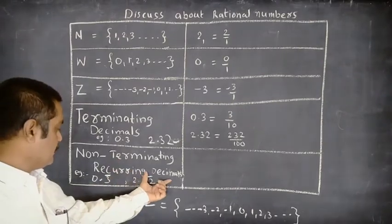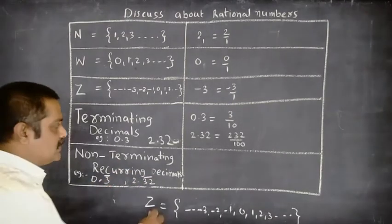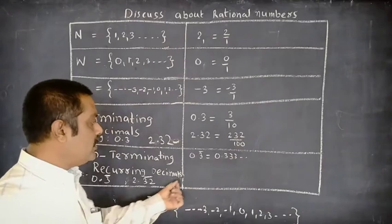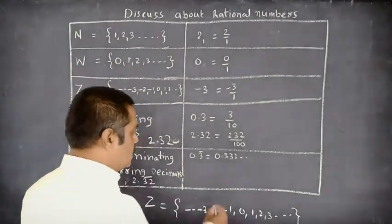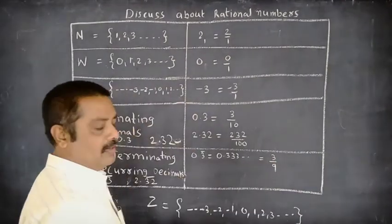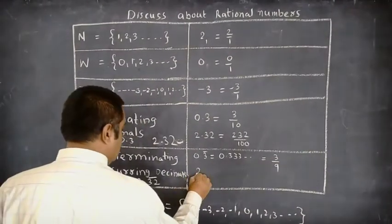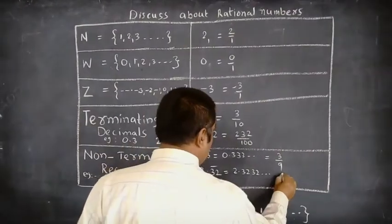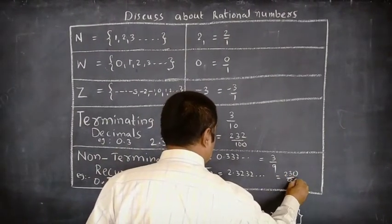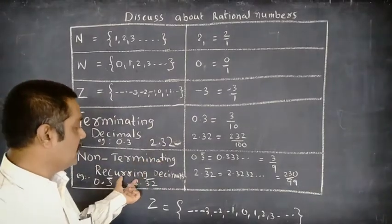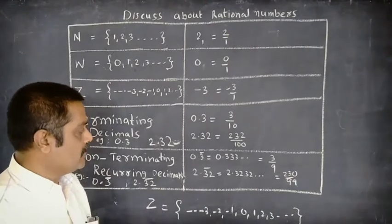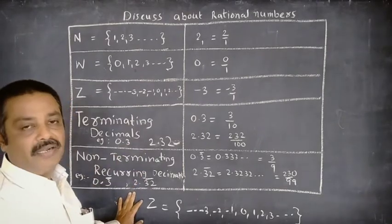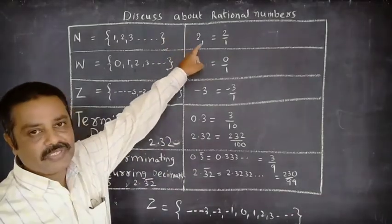Next, non-terminating recurring decimals. For example, 0.3̄ means 0.333... — this is a non-terminating recurring decimal and can be written as 3/9. Similarly, 2.32̄ means 2.3232... and can be written as 230/99. Every non-terminating recurring decimal can also be written as P/Q. So natural numbers, whole numbers, integers, terminating decimals, and non-terminating recurring decimals are all treated as rational numbers.